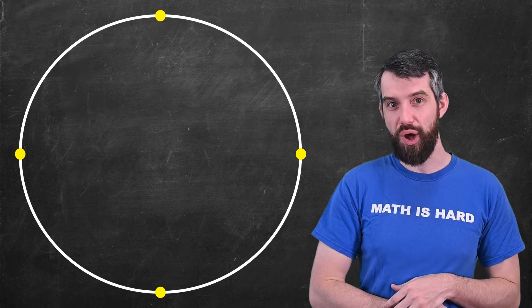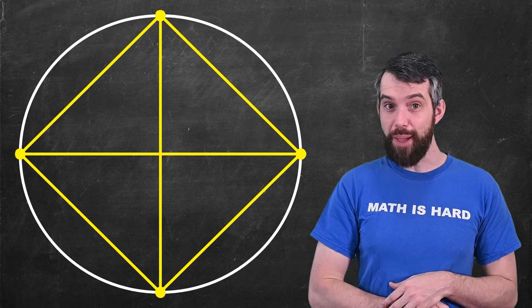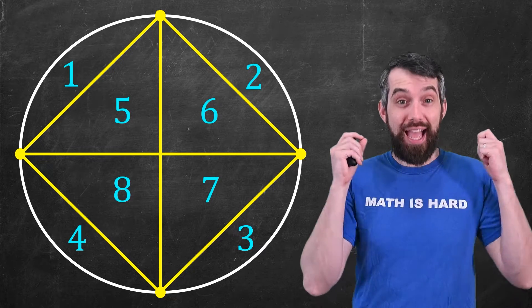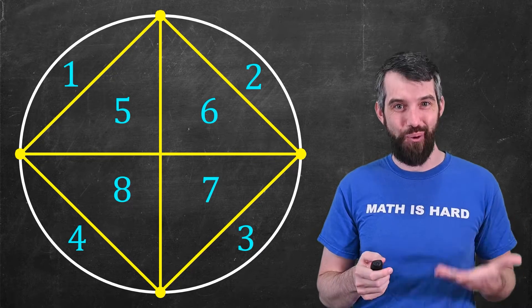Let's do four dots now. Connect all of those up, count them up, and what do you get? You get eight regions. So one, two, four, eight.